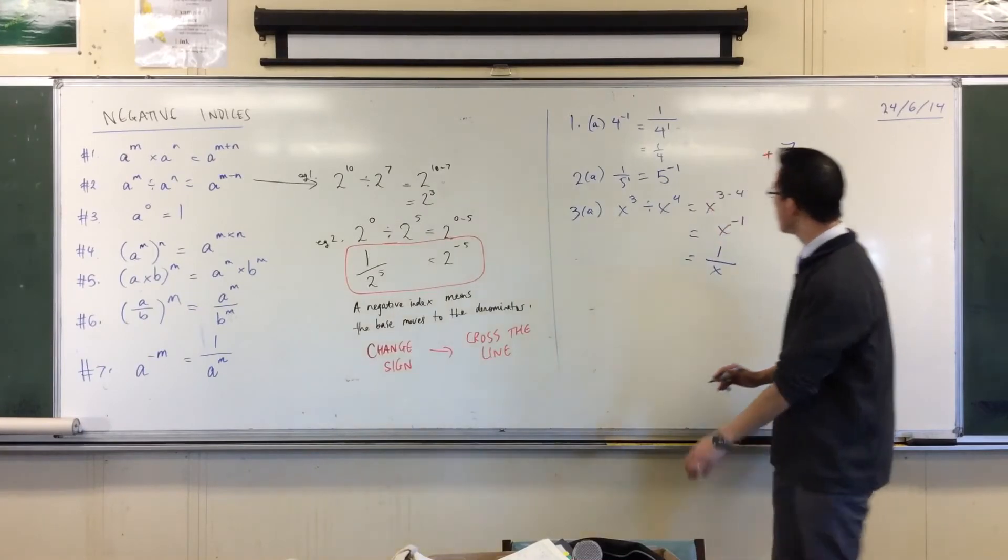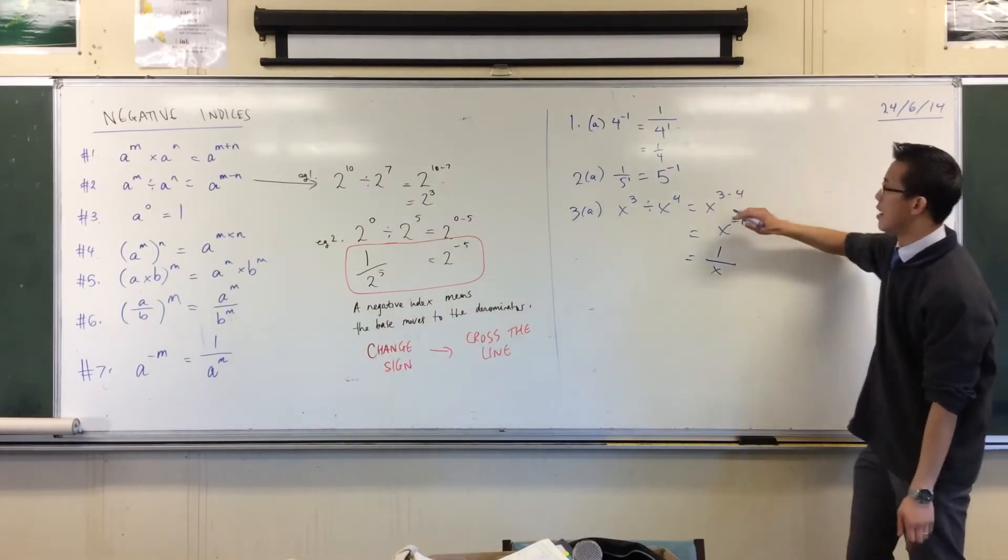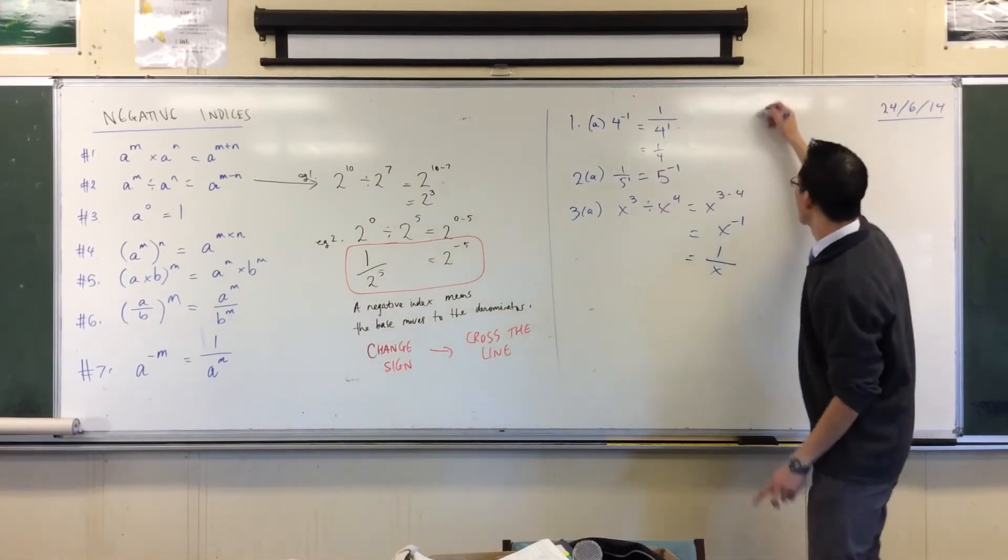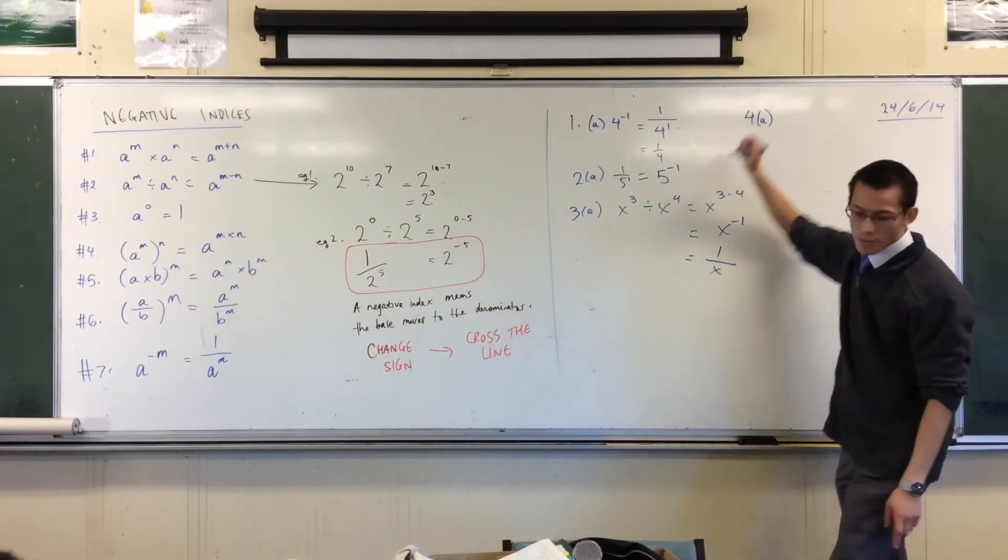Now when you move into question 4 and 5, they're really doing the same thing as 1 and 2. For example, 4a - they give you this: 5 to the power of minus 2.